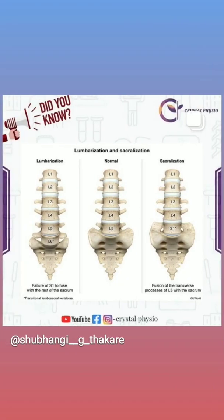As you can see in this picture, the normal structure of our spine. In lumbarization, the sacral segment fails to fuse with the rest of the sacrum, so we can see the extra lumbar spine. And in sacralization, there is fusion of the transverse processes of L5 with the sacrum, so we can see the extra sacral segment.